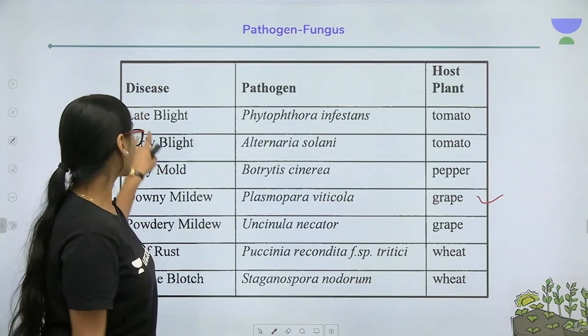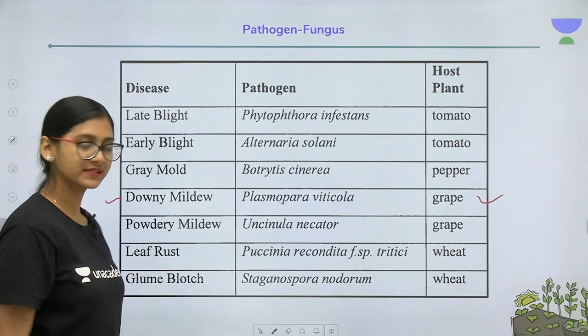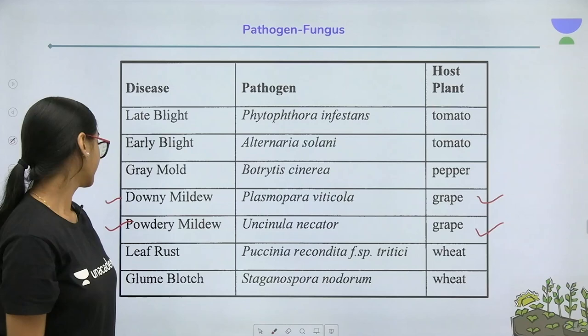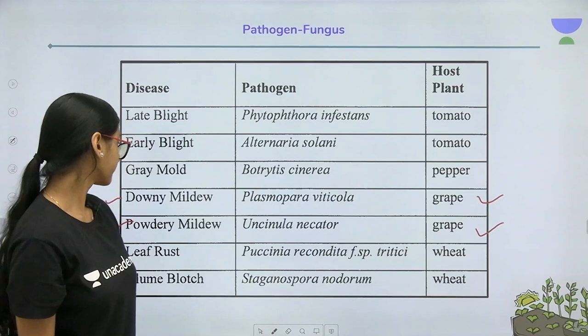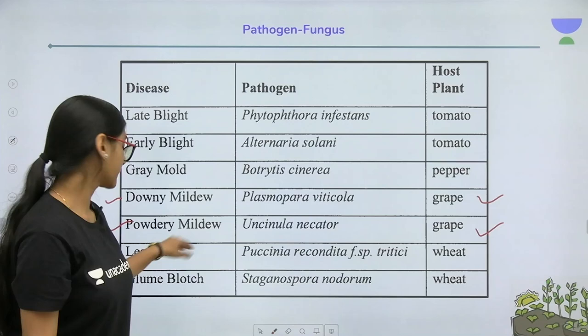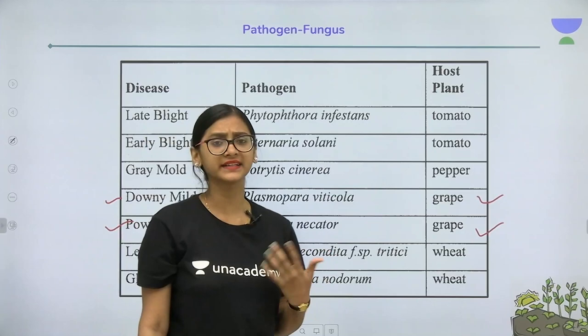Downy mildew is seen in grapes — this is very important, as questions related to downy mildew and powdery mildew have frequently occurred in various competitive exams. Leaf rust and glume blotch are seen in wheat. Paxenia is an important fungus that is also parasitic in nature and causes rust disease in plants.